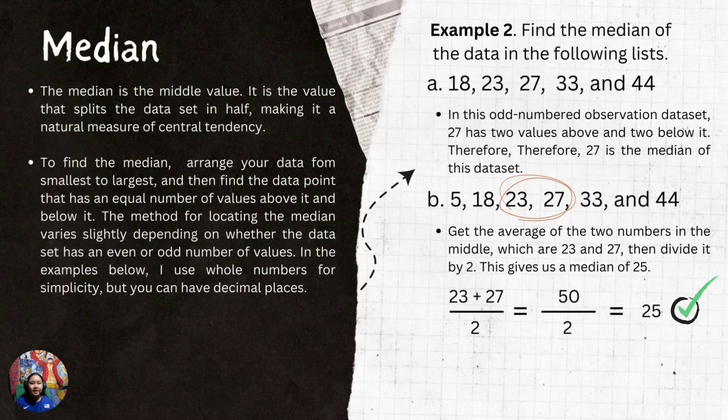The median, or the middle value, is the value that splits the data set in half, making it a natural measure of central tendency.